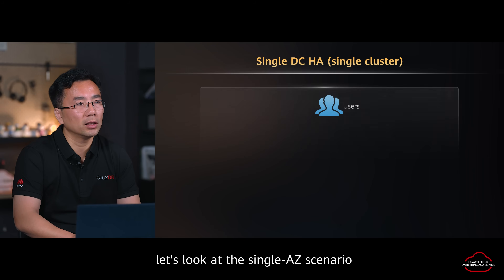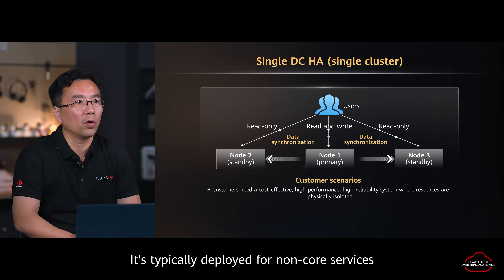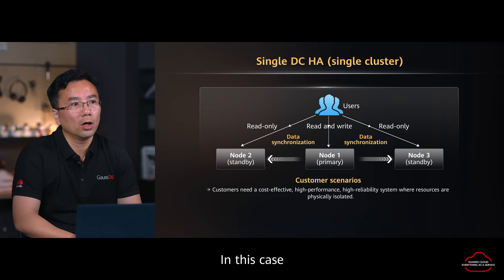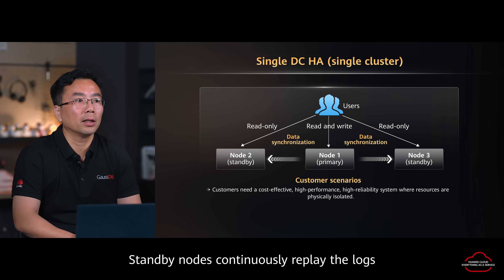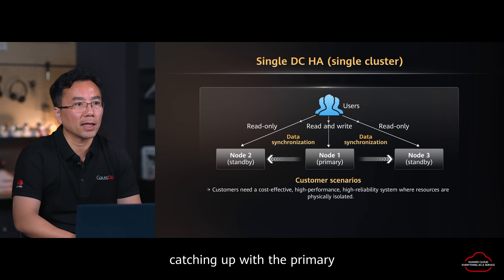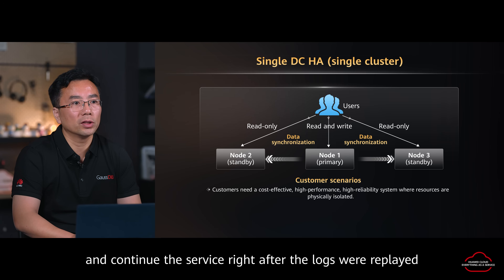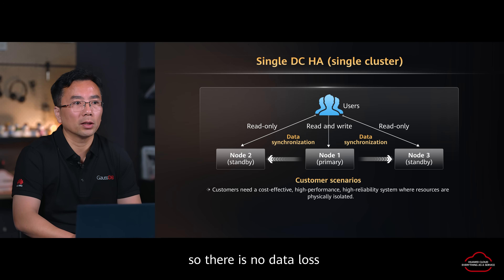First, let's look at the single AZ scenario, also called primary-standby solution. It's typically deployed for non-core services that are sensitive to cost but don't have high requirements on high availability and performance. In this case, logs from the primary system are synchronously shipped to the standbys. Standby nodes continuously replay the logs and catch up with the primary. In the case of a primary failure, the standby can quickly promote to a primary node and continue service right after the logs are replayed. Since the logs have already been shipped to the standby, there is no data loss.